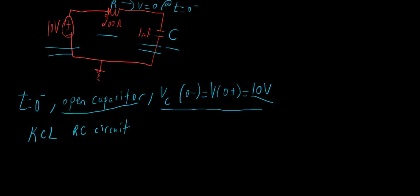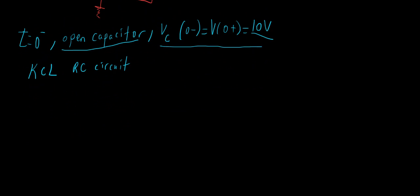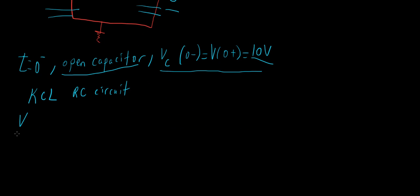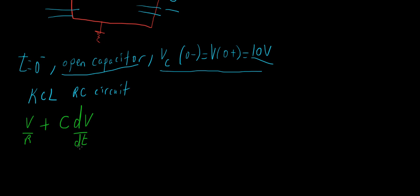Now that we know this, we apply KCL to this RC circuit. The KCL: you need to know the current through the resistor and the current going through the capacitor. The current through the resistor is V over R — we all know this. And the current going through the capacitor is C times dV/dt, and the sum equals 0.